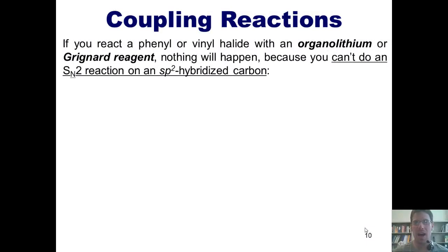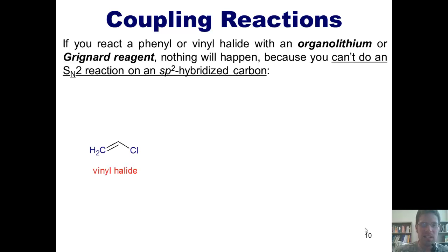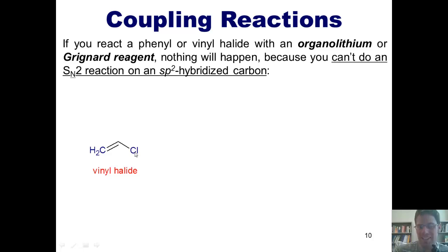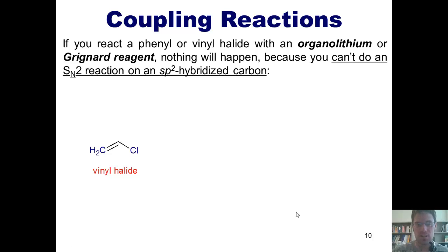In this lecture video, I'm going to start teaching you about coupling reactions. If I've got this type of molecule, it's called a vinyl halide — it's where I've got a halogen, in this case a chlorine, coming directly off of one of the two carbons in a double bond. You'll note that the carbon attached to the chlorine is sp2 hybridized.